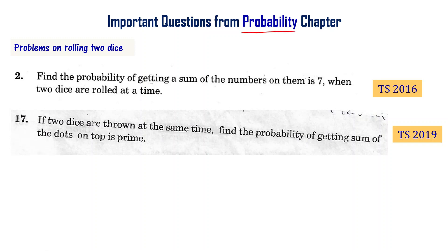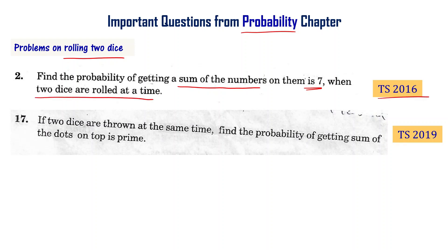Probability chapter: important problems on rolling two dice. Find the probability of getting a sum of the numbers equal to 7 when two dice are rolled at a time — this is from the Telangana final exam 2016. If two dice are thrown at the same time, find the probability of getting the sum of the dots on top is a prime — Telangana final exam 2019.